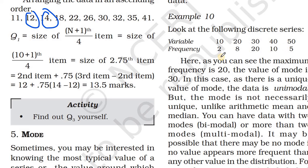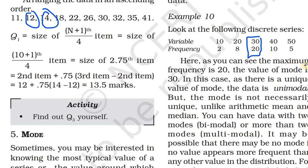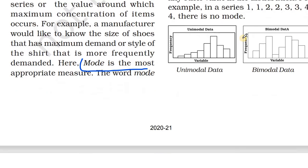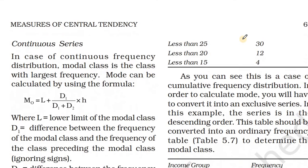Look at the following discrete series: 10, 2, 28, 30, 20, 40, 10, 50, 5, 30, 20. We know 30 is repeating more. The value of mode is 30. Whichever number repeats the most times, that one is the mode.